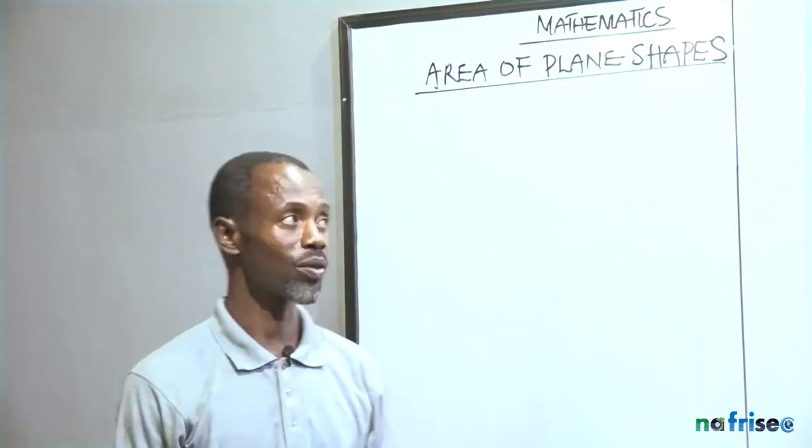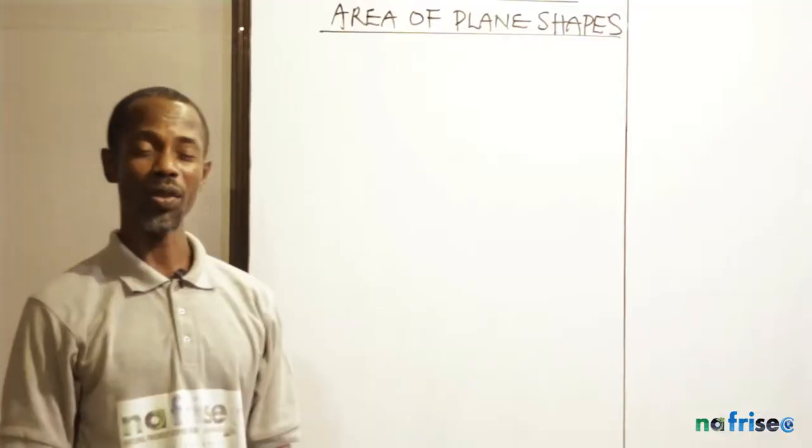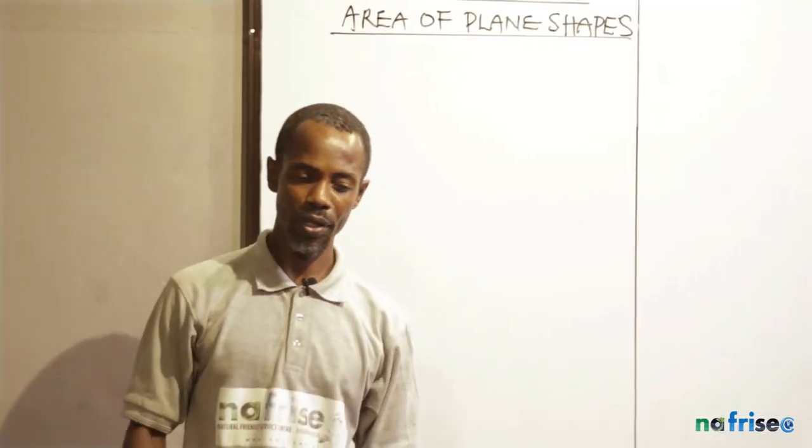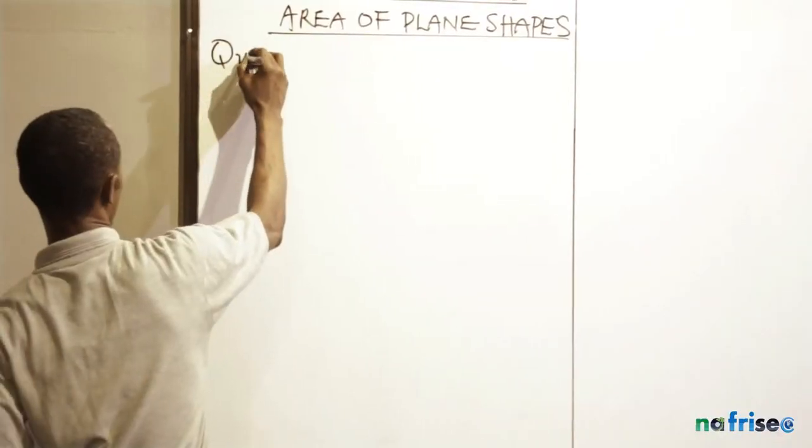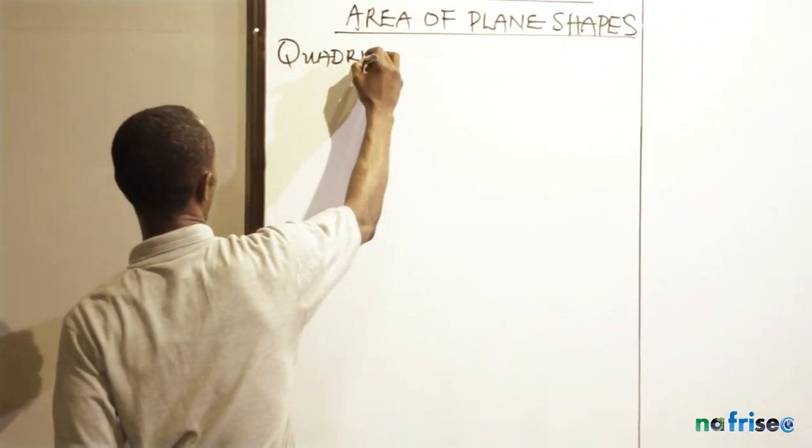Hello class, I'll be talking about plane shapes today. This time we'll be talking about the area of plane shapes. I will start with the quadrilaterals. What are the quadrilaterals? They are the four-sided shapes.